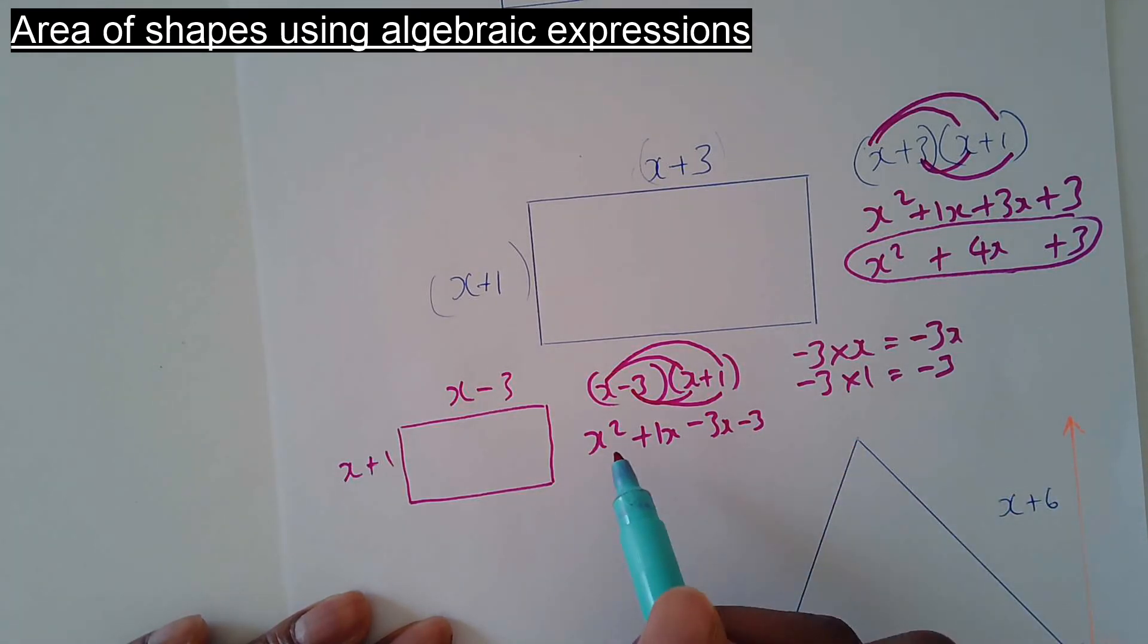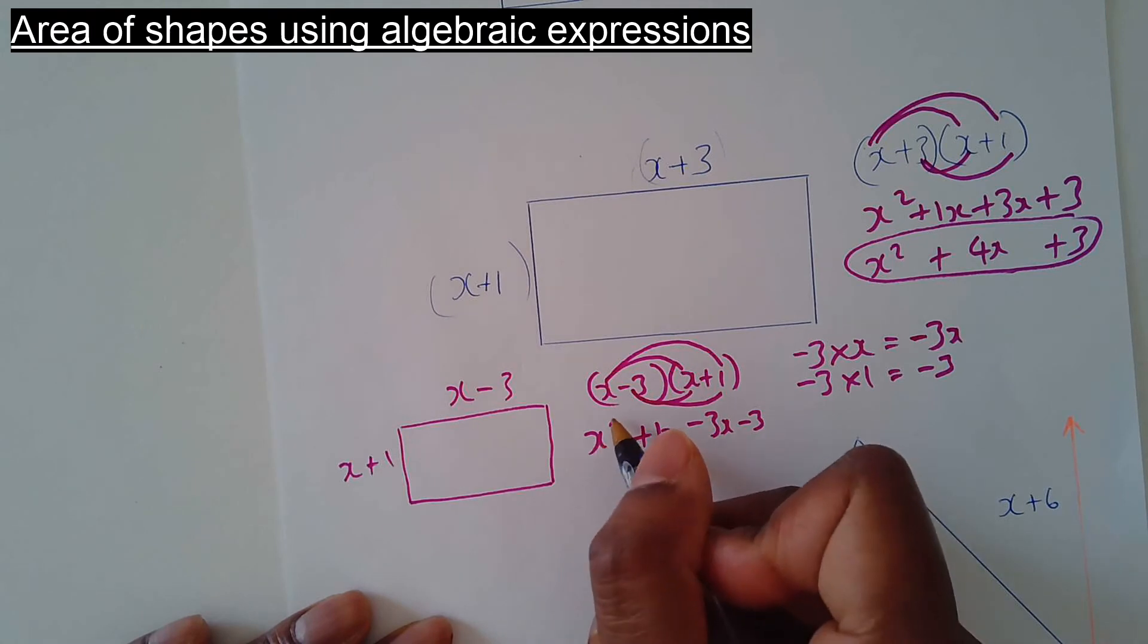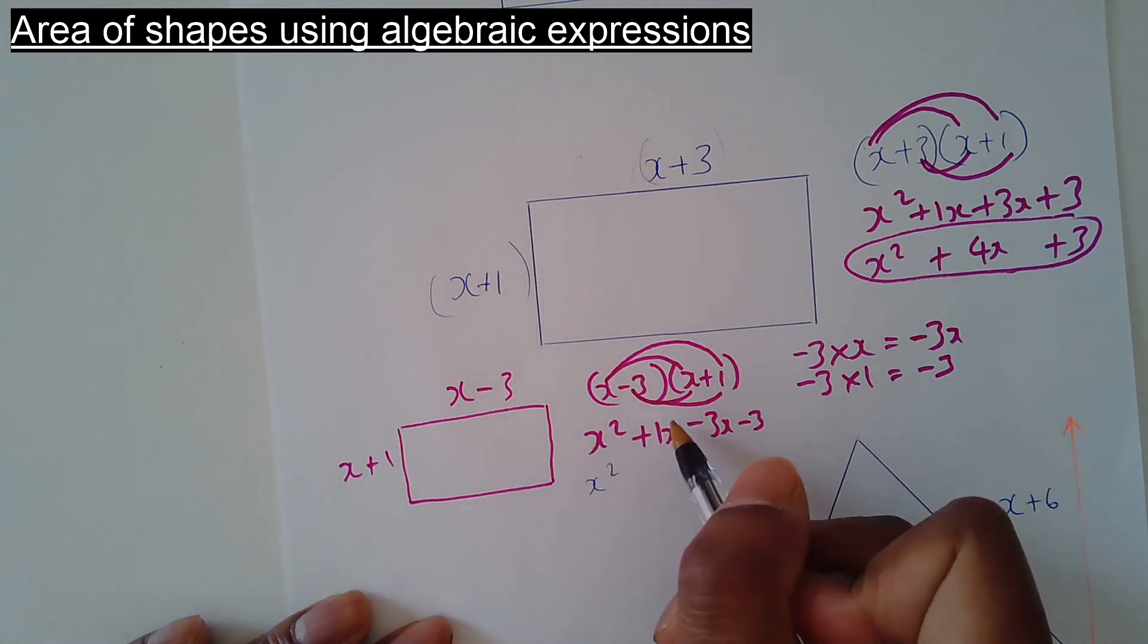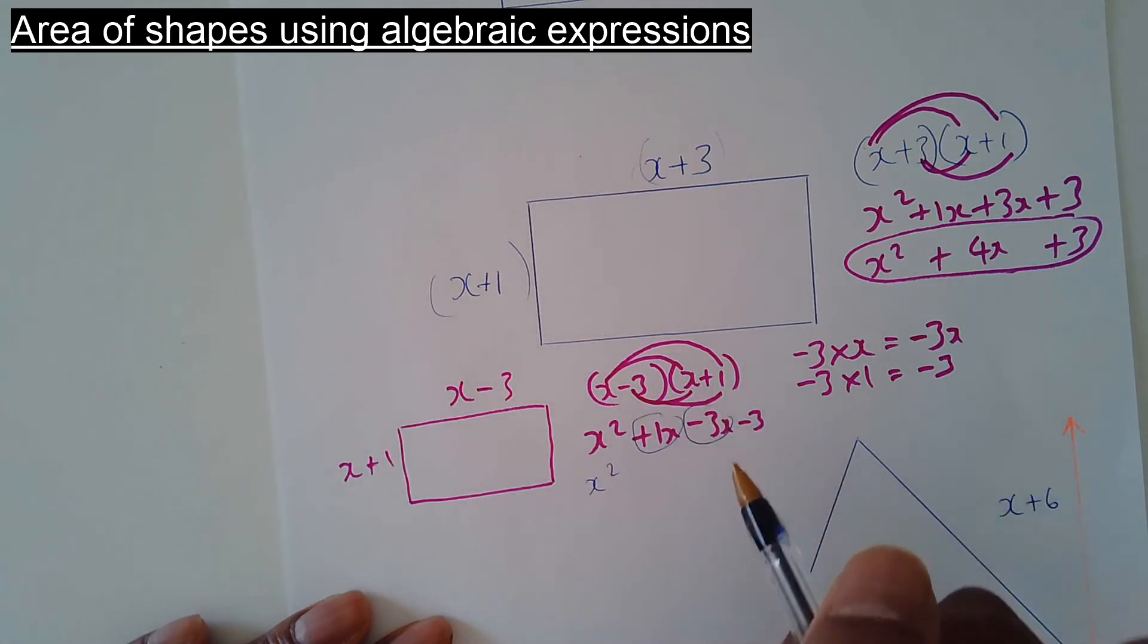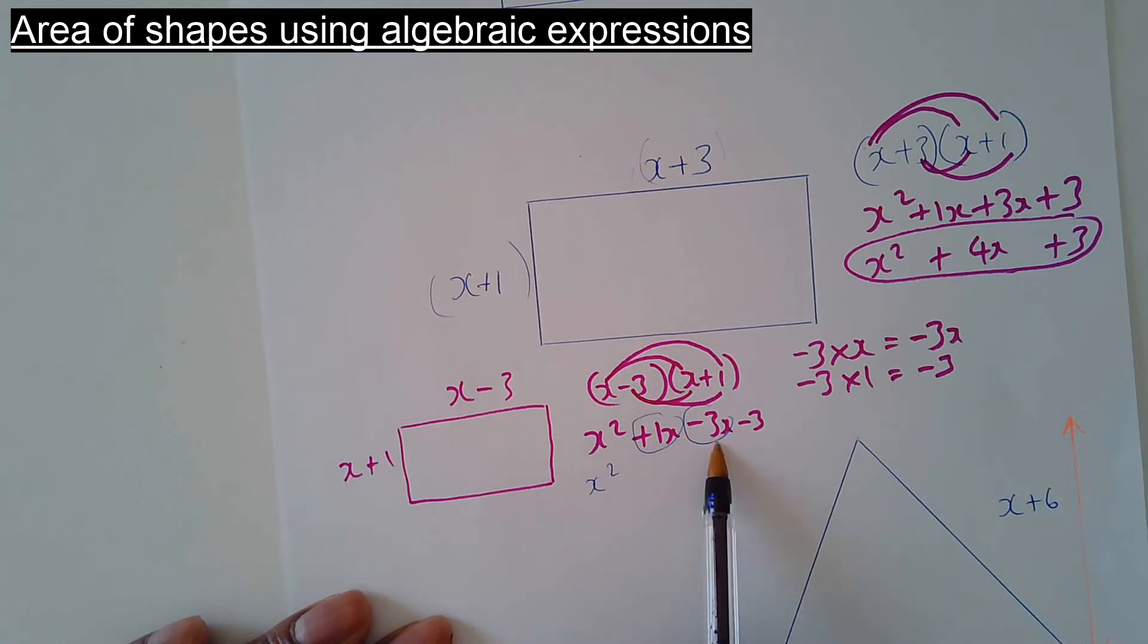Now we need to simplify. So you've got x squared by itself. You've got that x squared by itself. Now you've got 1x. Like term, 1x take away 3x. Think about the number line. 1x take away 3.